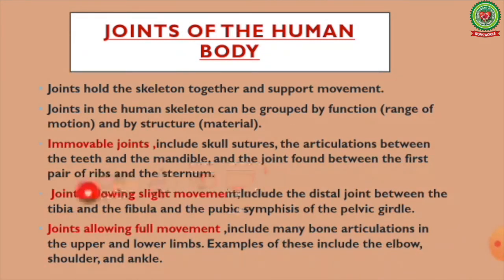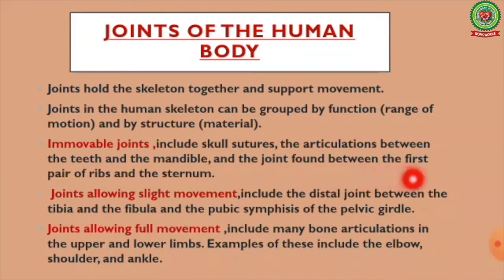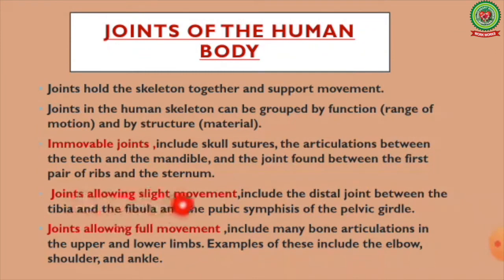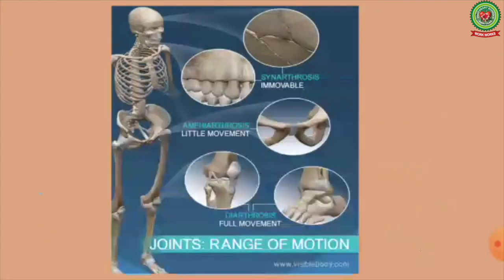Next are joints that allow slight movement, including the distal joint between the tibia and fibula and the pubic symphysis of the pelvic girdle. The third type allows full or maximum movement, including many bone articulations in the upper and lower limbs. Examples include the elbow, shoulder, and ankle joints.